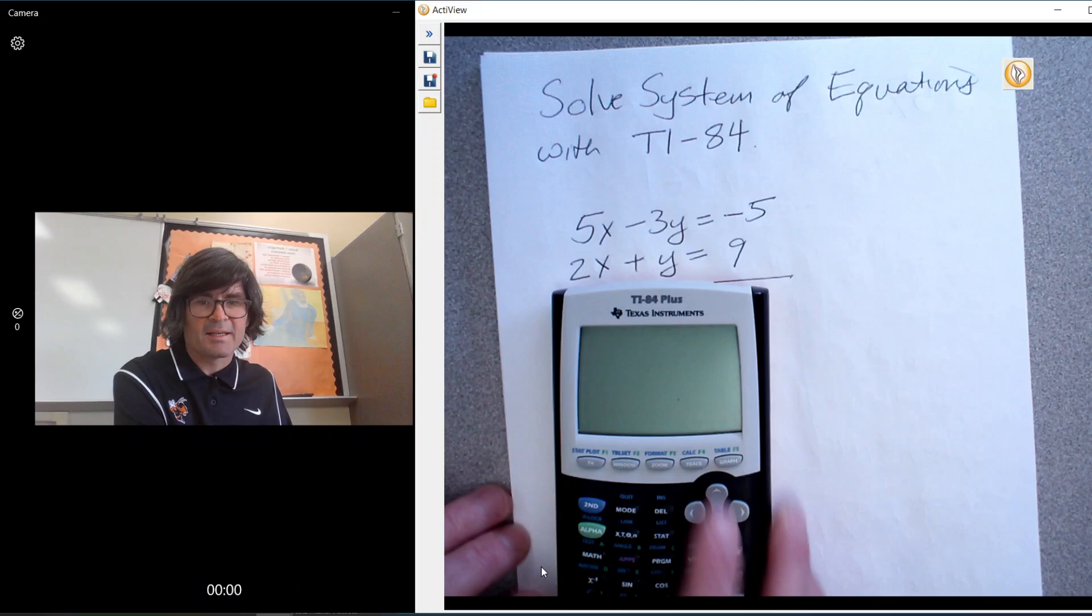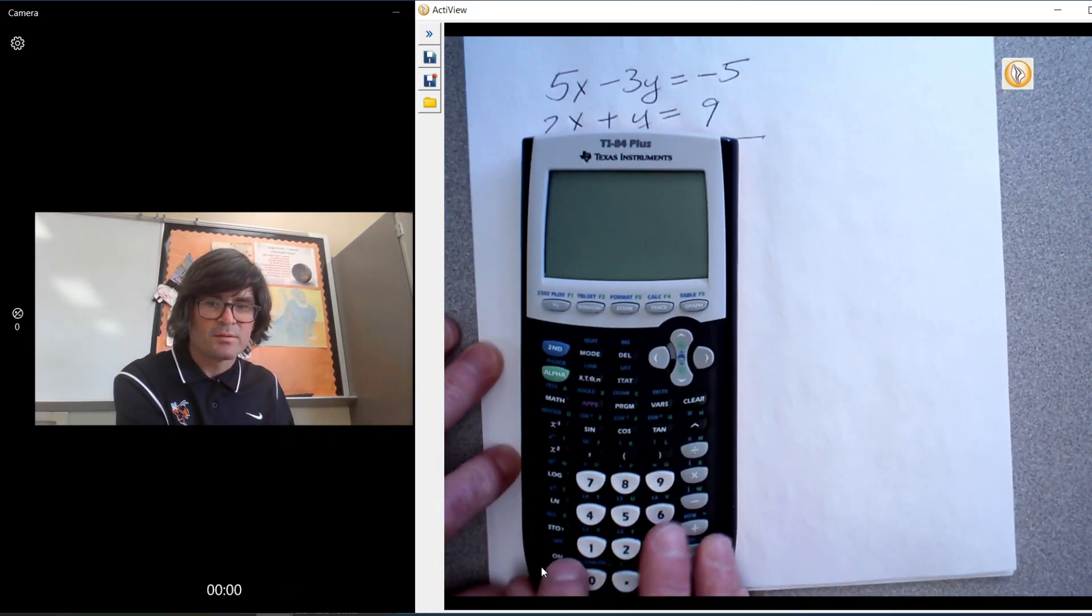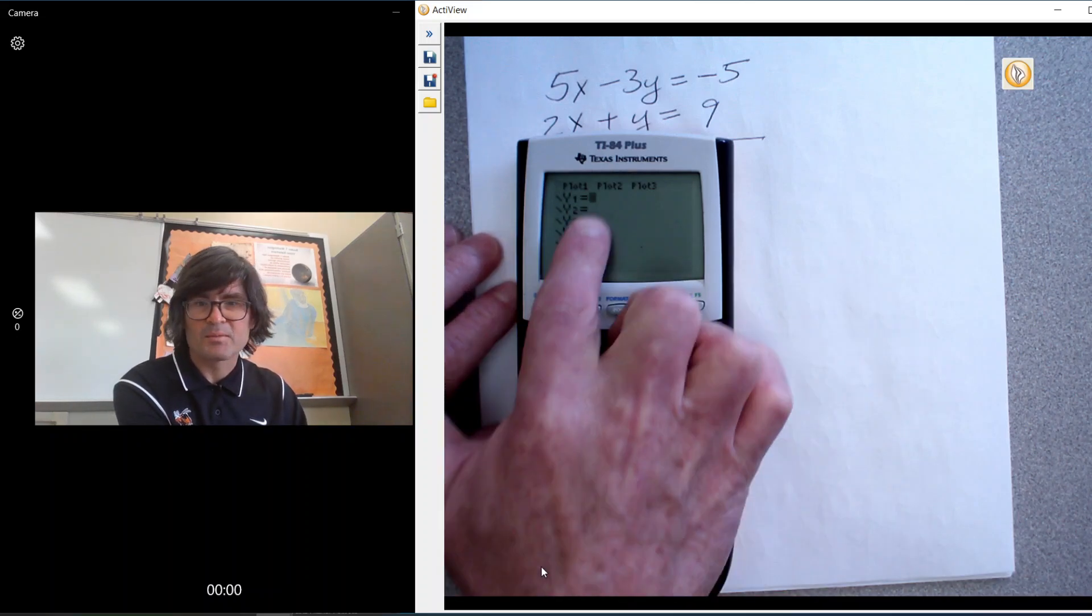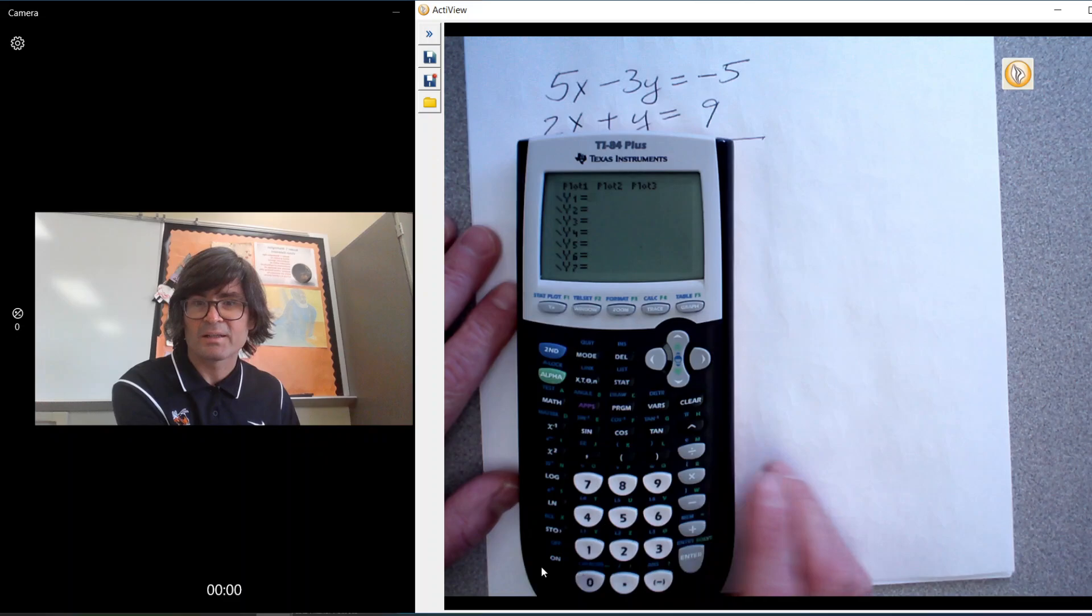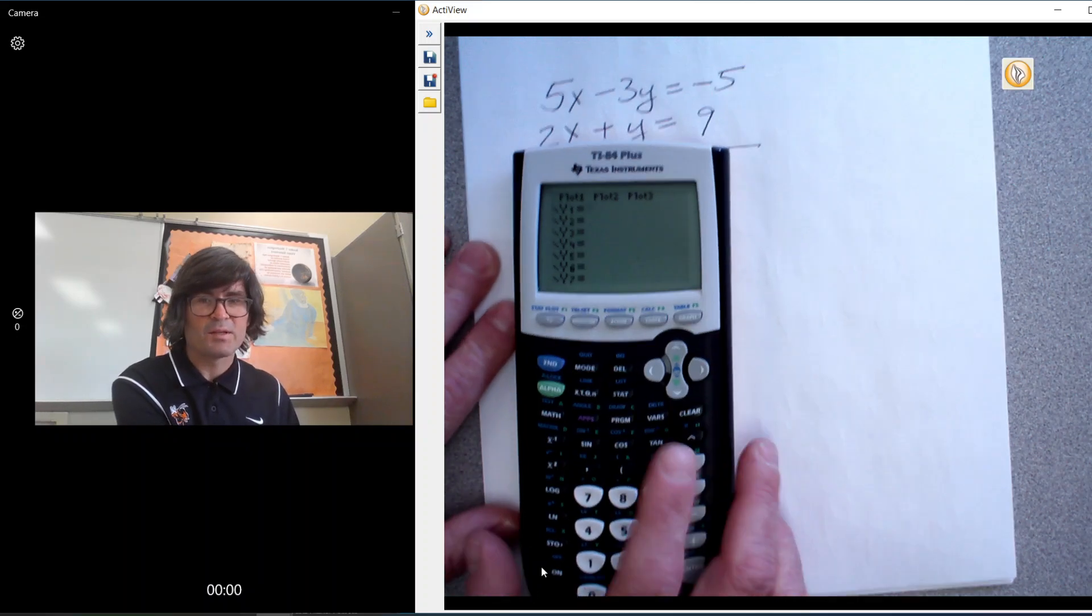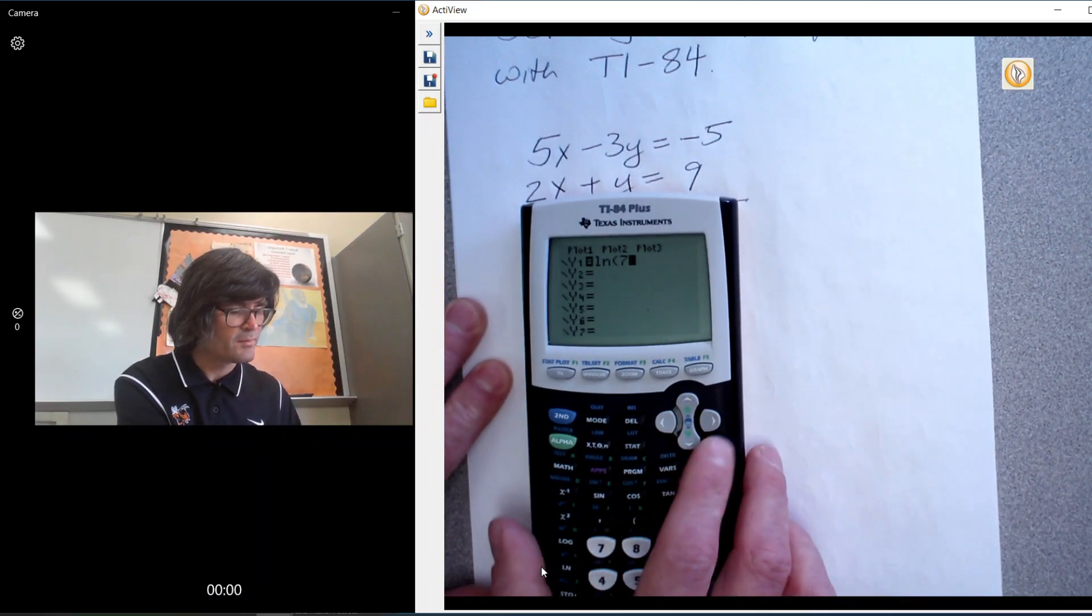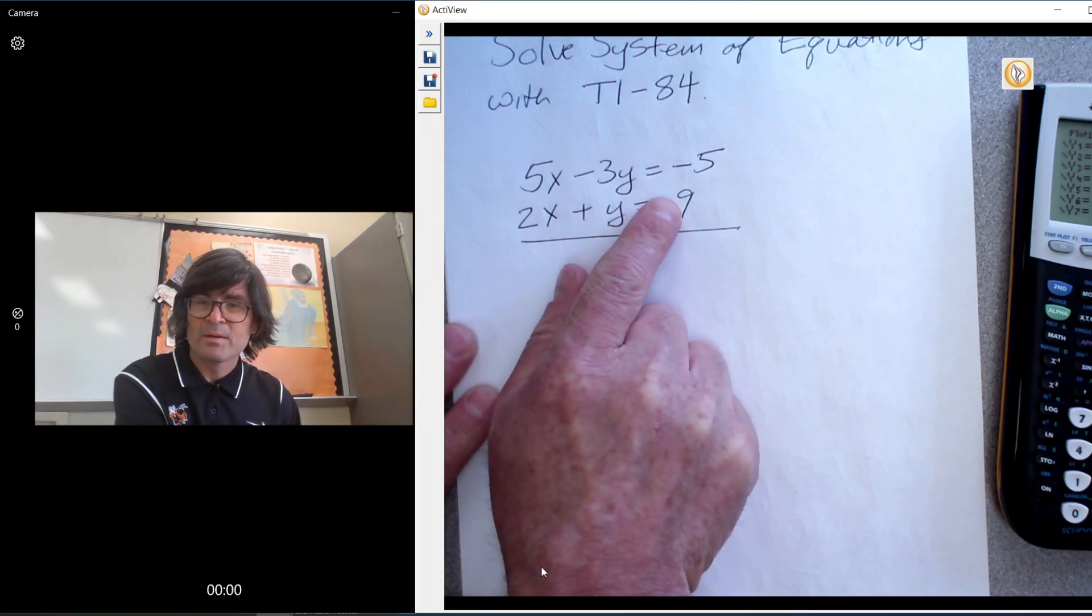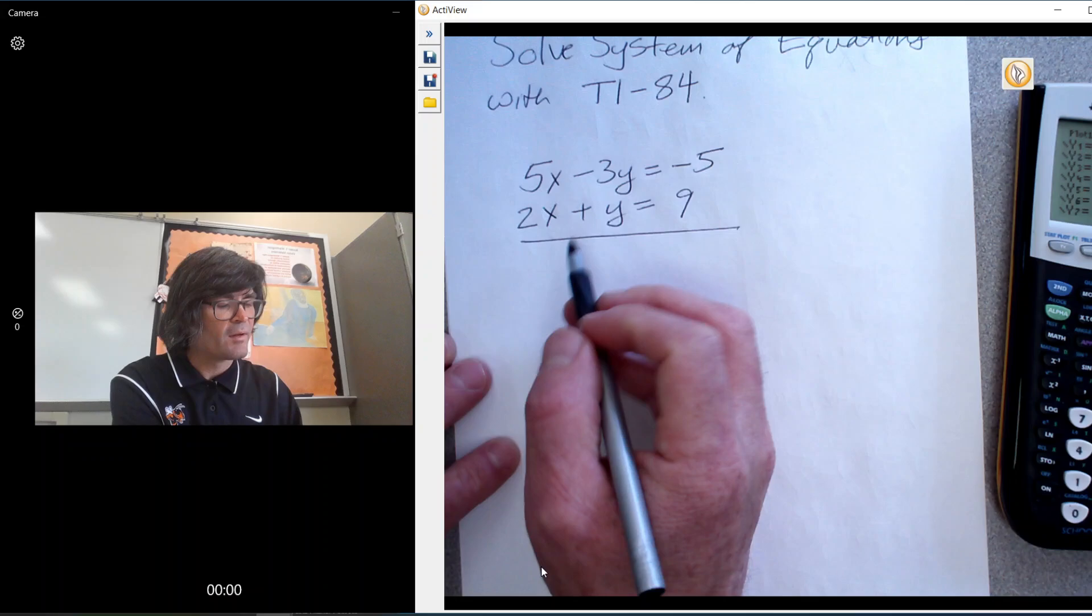When you turn on a TI calculator, you push on, and if you want to graph something, you push y equals. You'll see prompts y1, y2 - those are different equations you can graph together. The thing you'll notice is you have y equals, which means with your existing equations, you need to get y equal to something. We're going to have to do a little bit of algebra to make that happen.